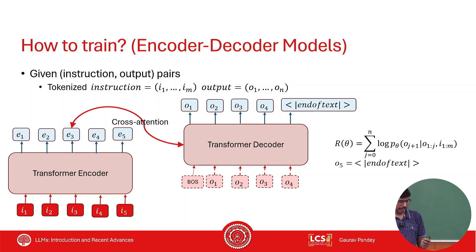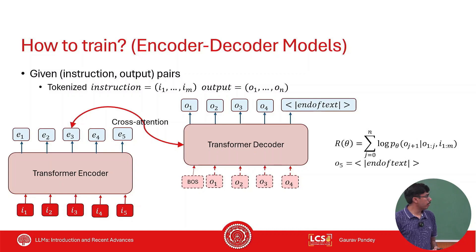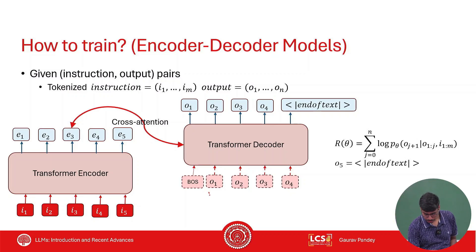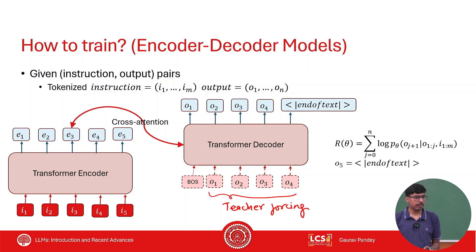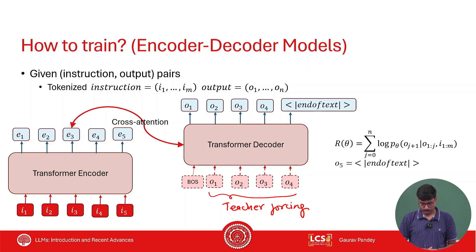For an encoder-decoder model, the loss still remains the same — conditional log likelihood — but the way you feed the tokens is different. You feed the input tokens to the encoder, and to the decoder you feed the beginning-of-sequence token and use teacher forcing. Teacher forcing means whatever you are trying to increase the probability of, you feed the previous tokens of that output sequence to generate the next token in the sequence.